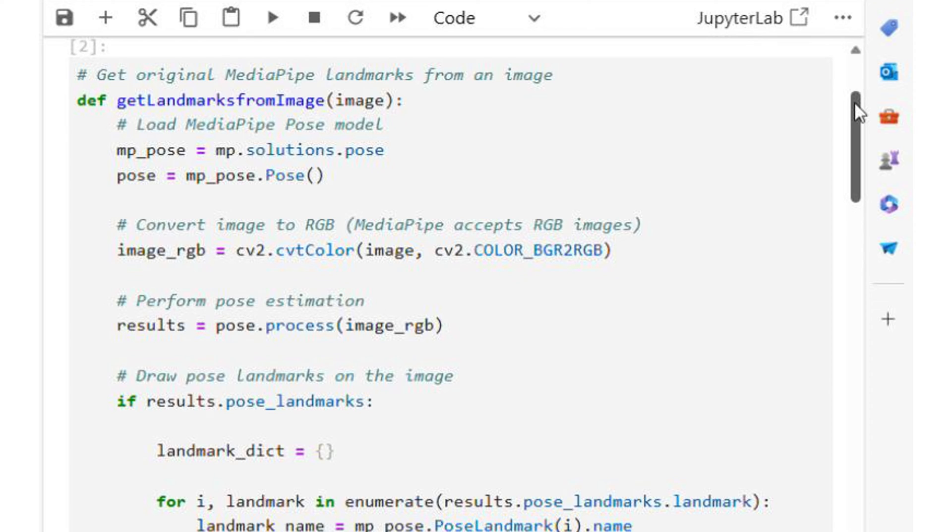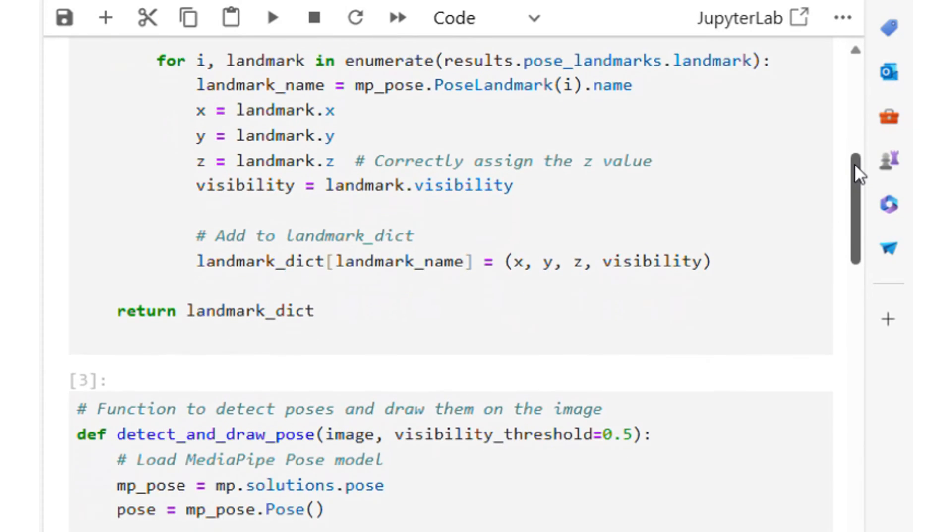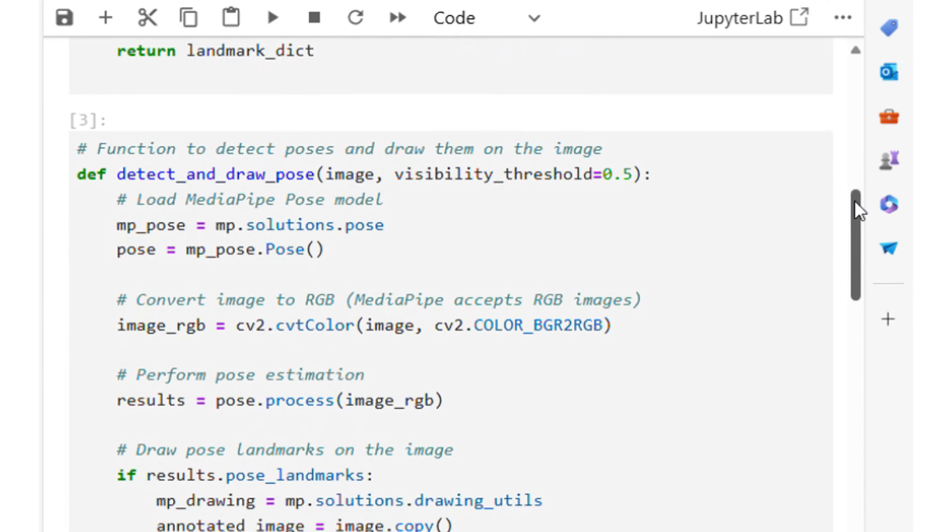For now, all you need to know is that given the image data, the function returns the detected points of the body, using which one can draw the skeleton or the structure of the body.